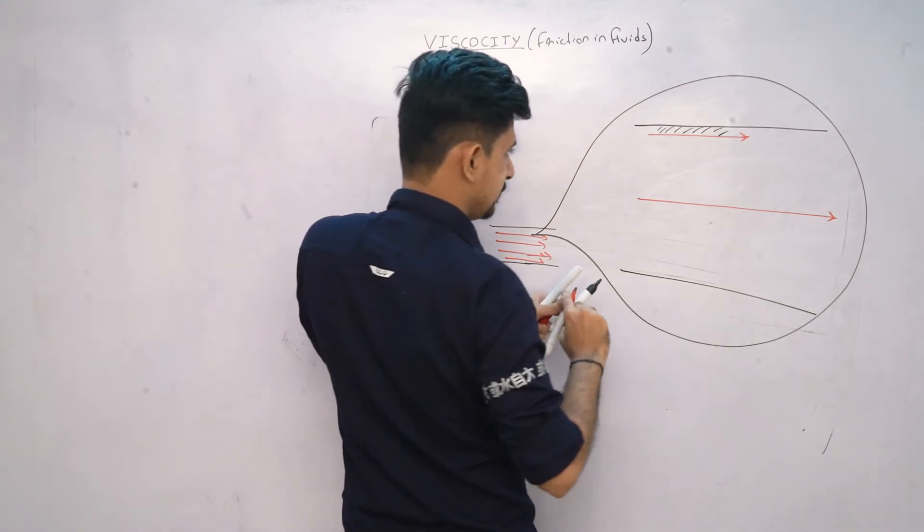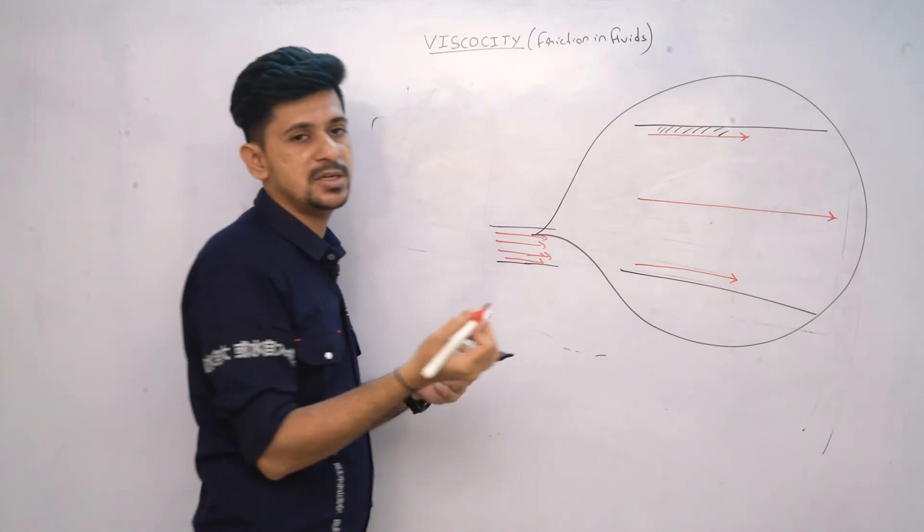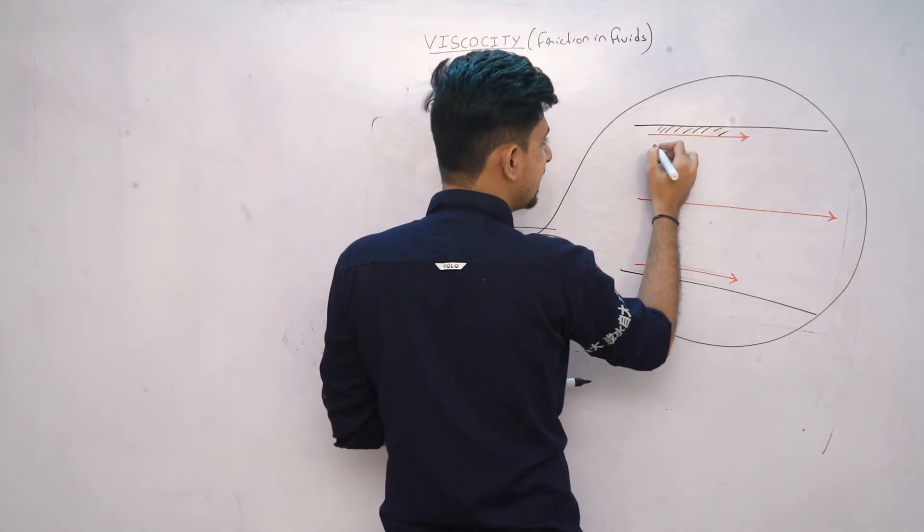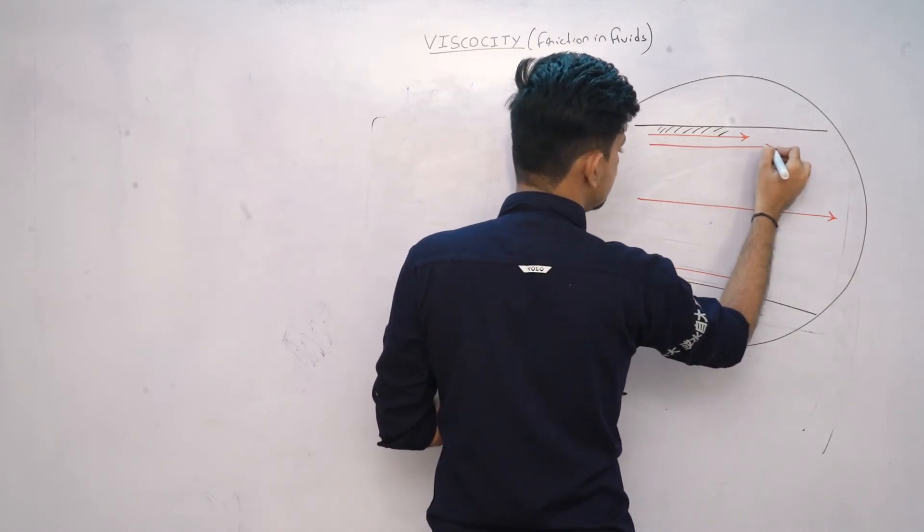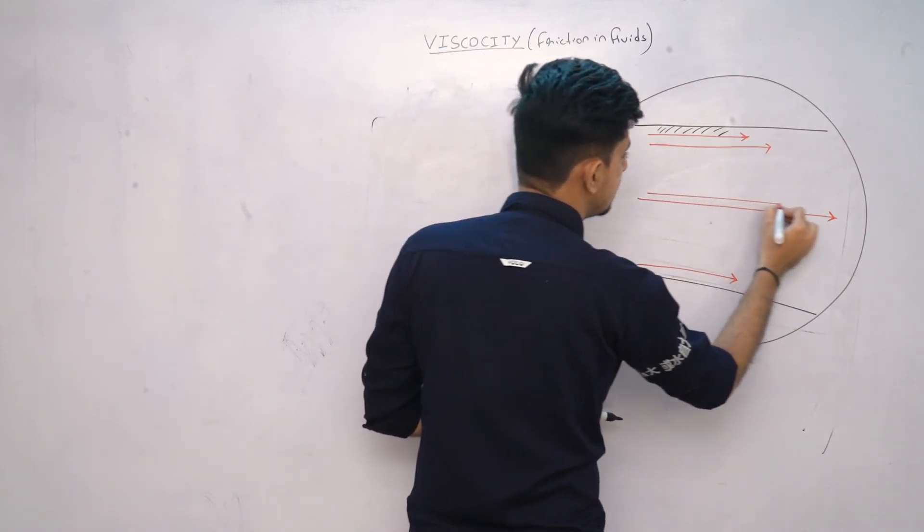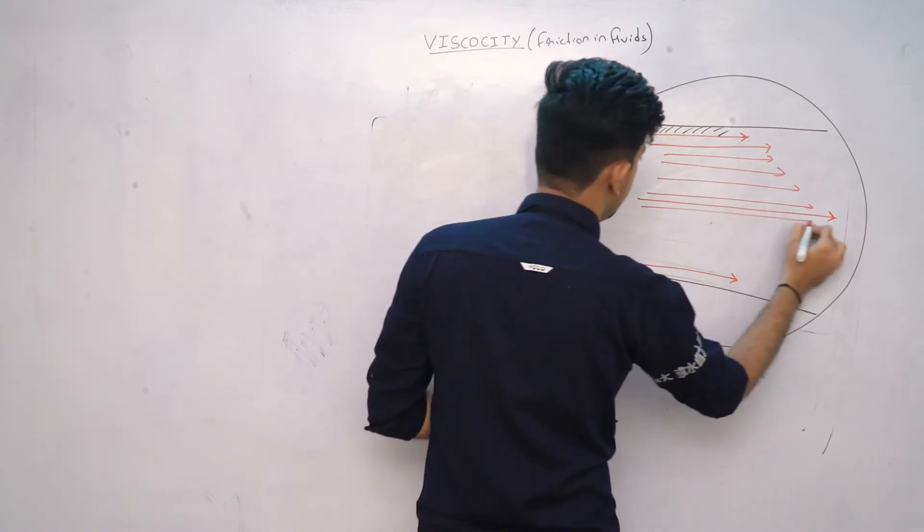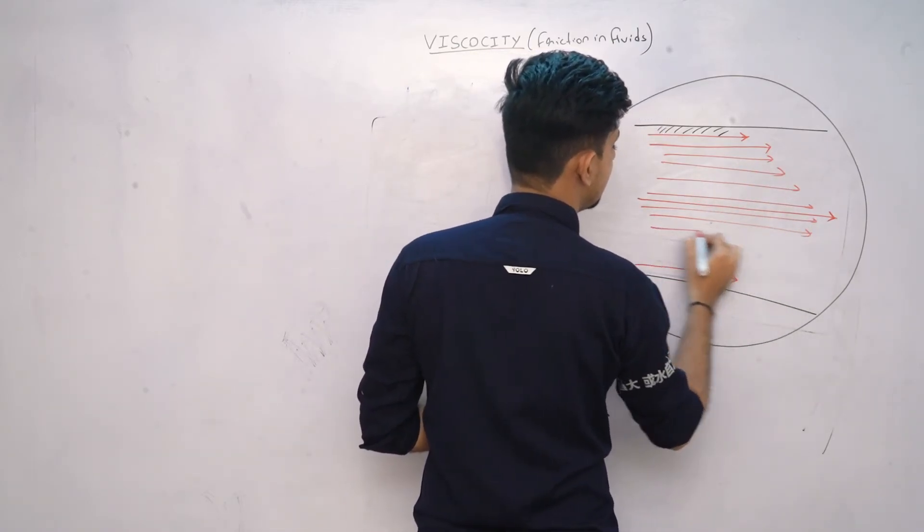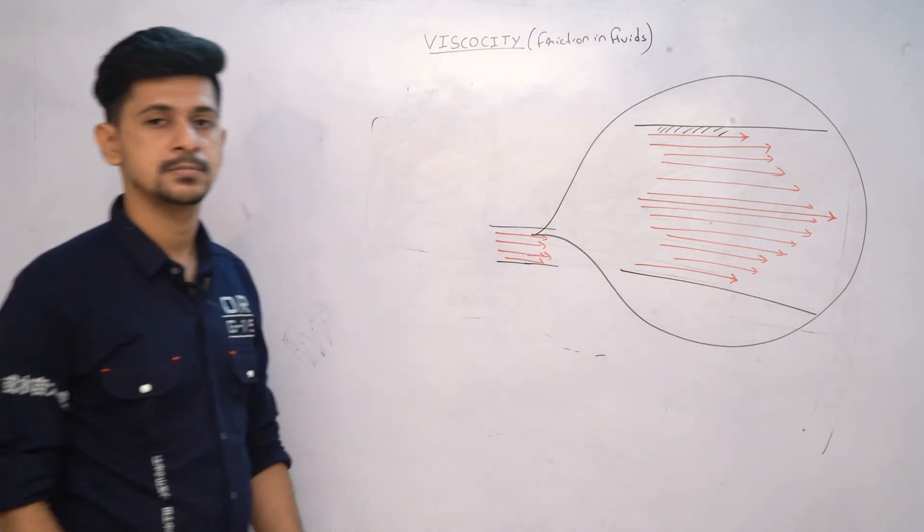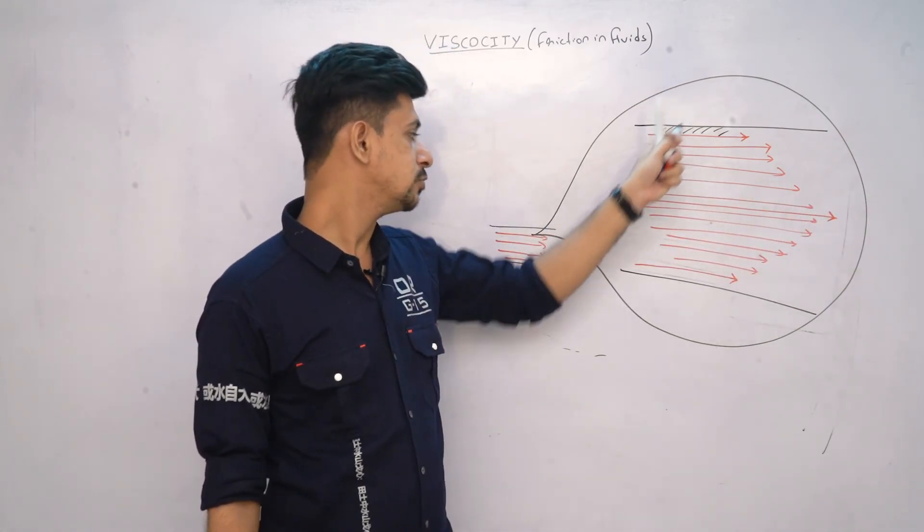Each layer will have different velocity. The layer in contact with the pipe wall will be slower, and the next layer will have slightly higher velocity. Due to contact, it slows down the adjacent layer. Like this, you'll see that within the same pipe, different layers are moving with different velocities. The highest velocity will be at the center.